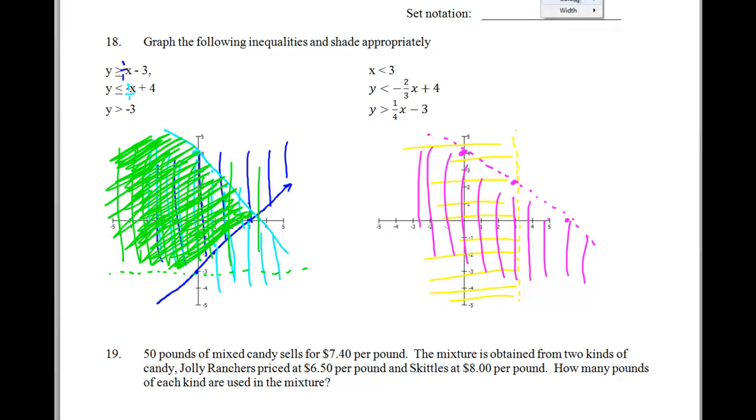Finally, the last graph here, let me change my color again from purple to red. Let's see, and then this is going to start at negative 3, and it's going to go up 1 over 4, like so, or down 1 and left 4. And this is going to be another dotted line. And this is going to be shaded up, like so.